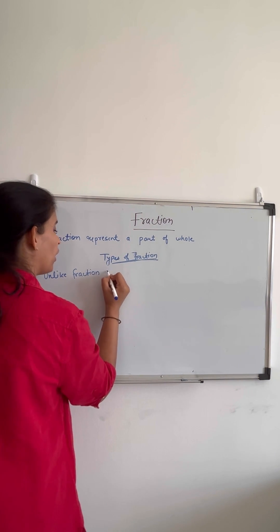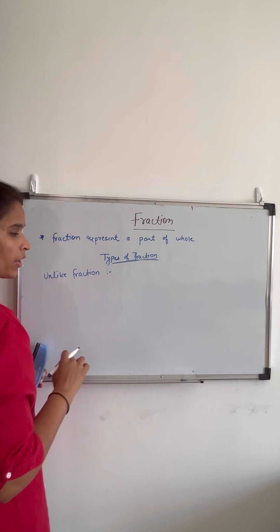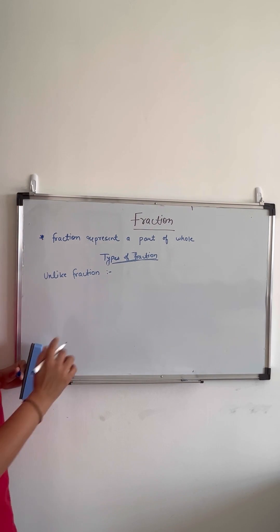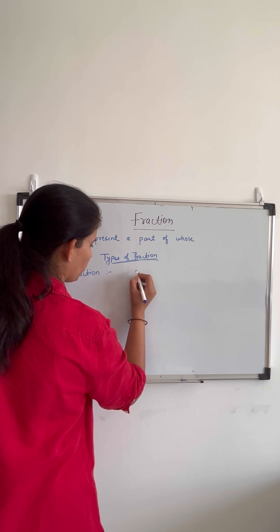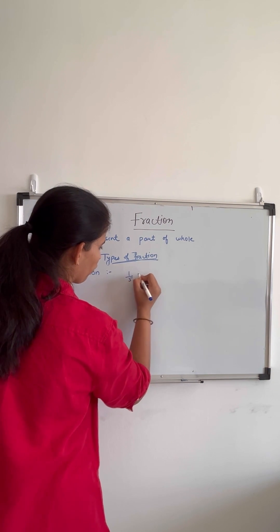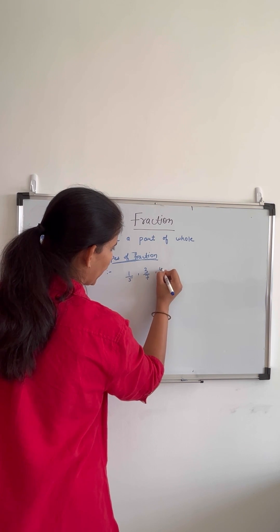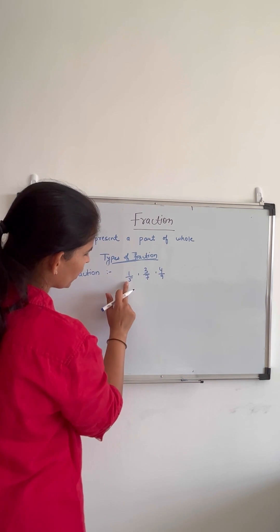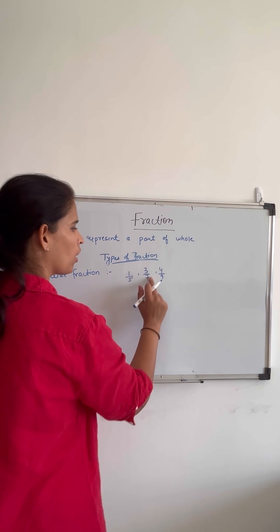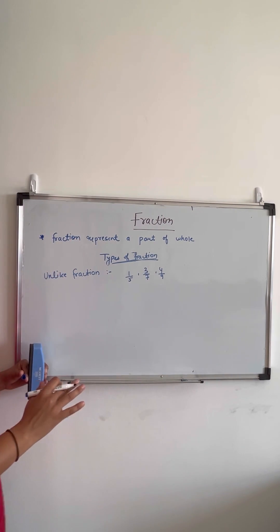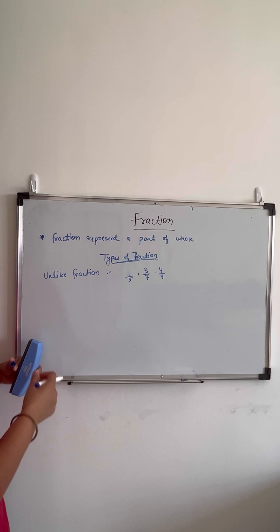Unlike fractions are those fractions whose denominators are not the same. For example, 1 by 5, 3 by 7, and 4 by 9 — the denominators are completely different from each other. This kind of fraction is called unlike fractions.